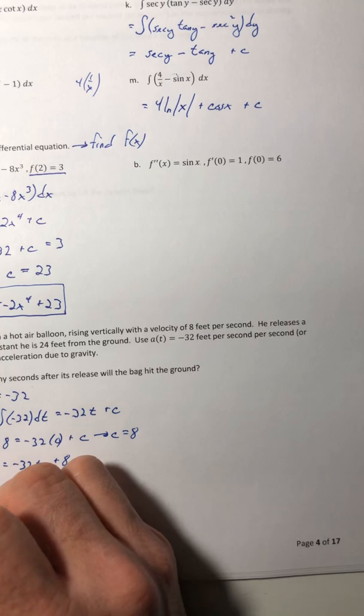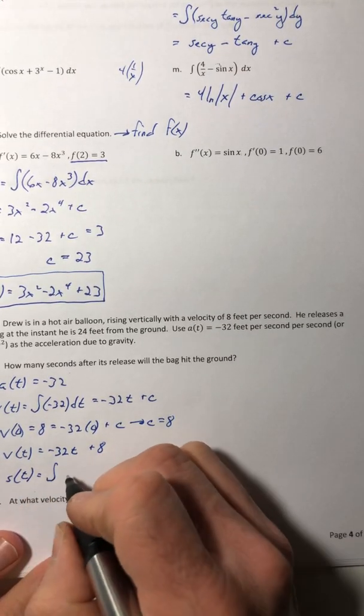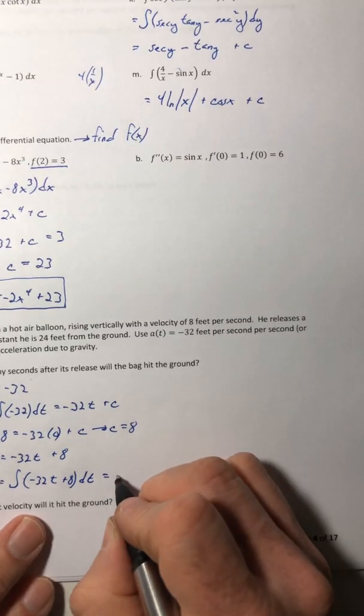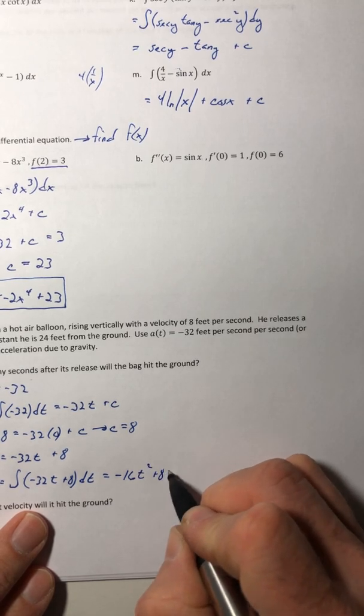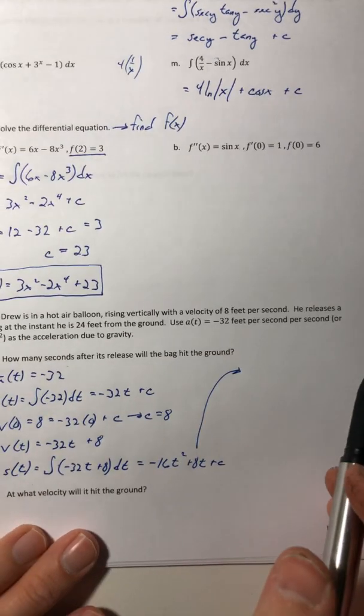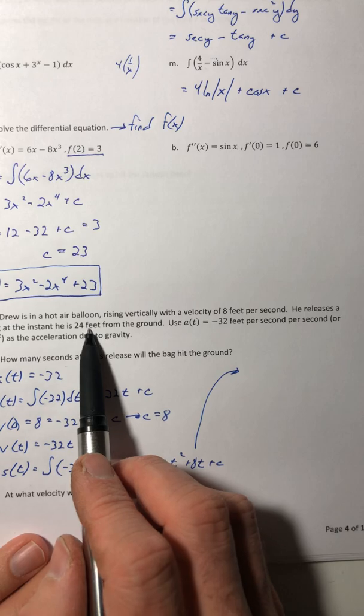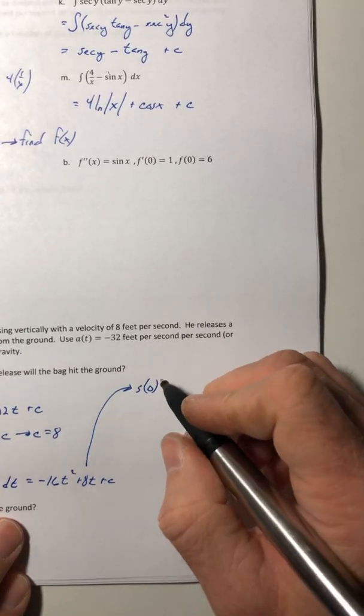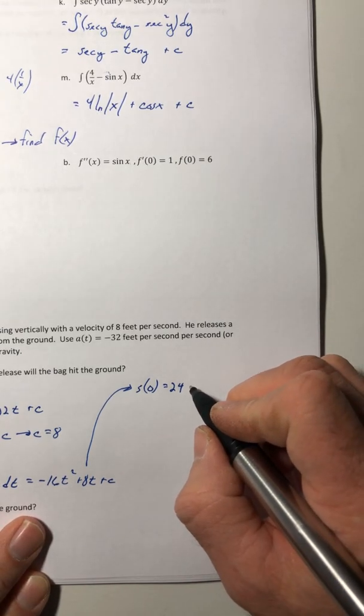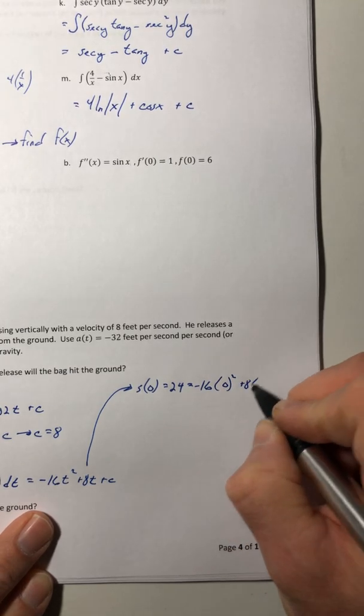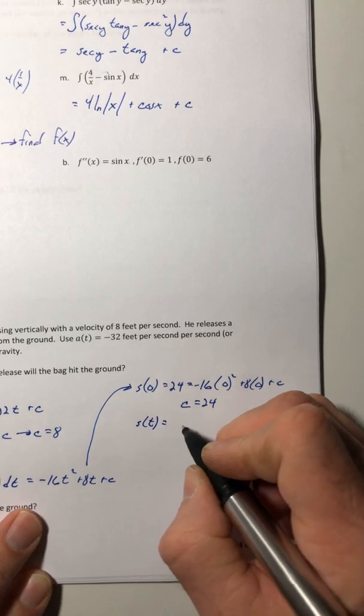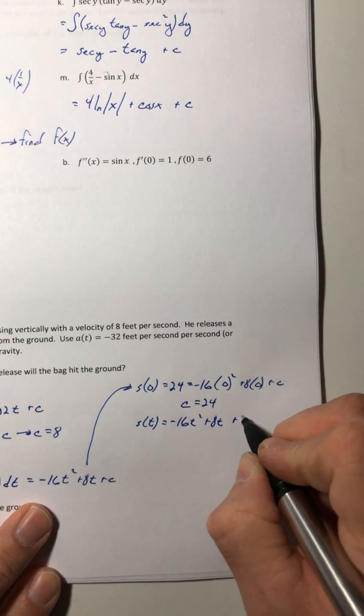Well, now you can get position. So we're just going to integrate velocity. And we end up with negative 16t squared plus 8t plus c. So we've got to solve for that c again. So somewhere in there they gave us some other data that we can use. And that's when he's 24 feet from the ground. So when time is zero for the first position. So when he drops the sandbag, that's when he's 24 feet off the ground. So let's stick in a zero for t. So your c is 24. So that gives you a position of negative 16t squared plus 8t plus 24.